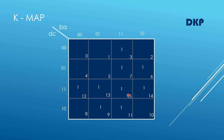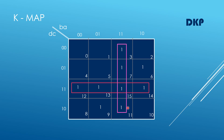We can form a group of ones called a quad here — one quad is formed. Now the next four: the ones in cell numbers 11, 15, 7, and 3 are adjacent and each contains a 1, so we can group them together. Since four ones are there, we can form another quad here.